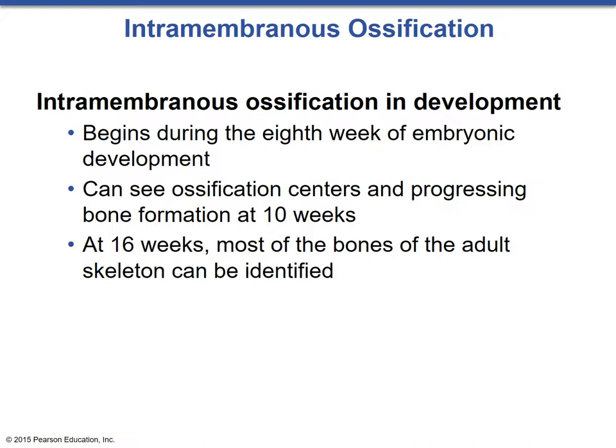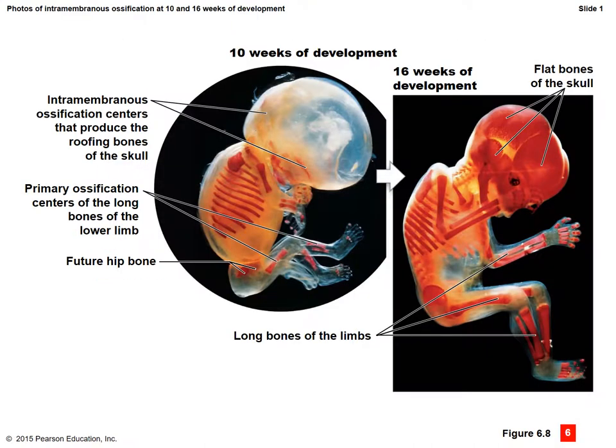Intramembranous ossification begins during the 8th week of embryonic development. Ossification centers and progressing bone formation can be seen at 10 weeks. At 16 weeks, most of the bones of the adult skeleton can be identified. We can see the difference between 10 weeks and 16 weeks of development, and the formation of many of the flat bones of the skull has already begun.